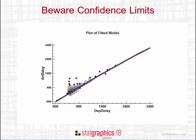Another thing you need to be very careful of when you're working with big data are confidence limits. This plot shows not only the estimated curve relating arrival delays to departure delays, but also 95% confidence limits for the estimated value of Y at various values of X. Those confidence limits are so tight you can't even see them. It looks, therefore, as if we know where the line relating arrival delay and departure delay is almost exactly. What we must not forget, however, when we have big data is that those confidence limits depend on an awful lot of assumptions applied when we fit this model using least squares regression.